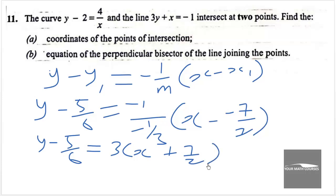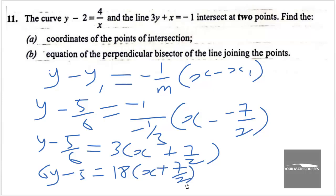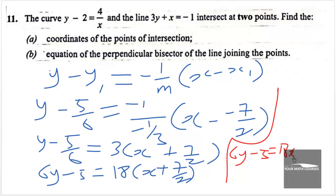Multiplying through by 6: 6y minus 5 equals 18 times (x plus 7/2). Expanding: 6y minus 5 equals 18x plus 63. Rearranging with all terms on one side: 18x minus 6y plus 68 equals 0. This is the equation of the perpendicular bisector of the line joining the two points of intersection.